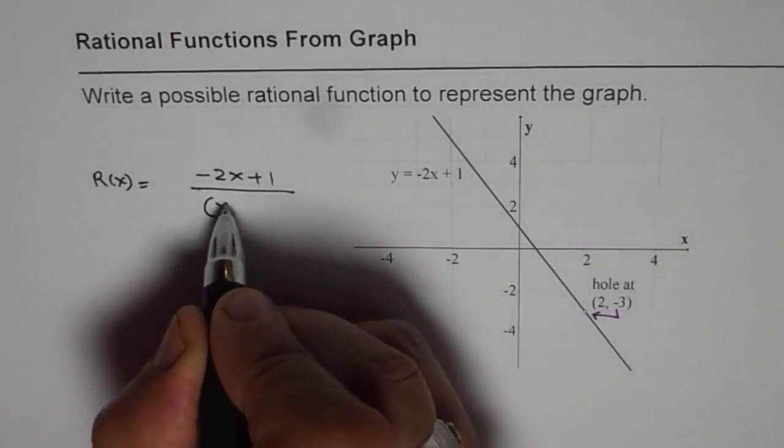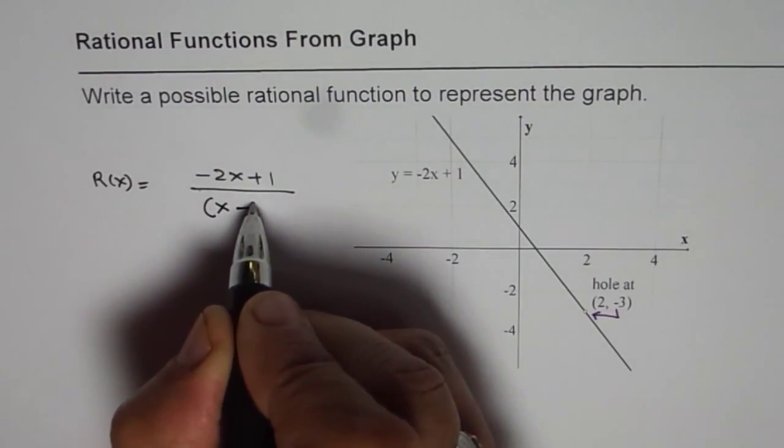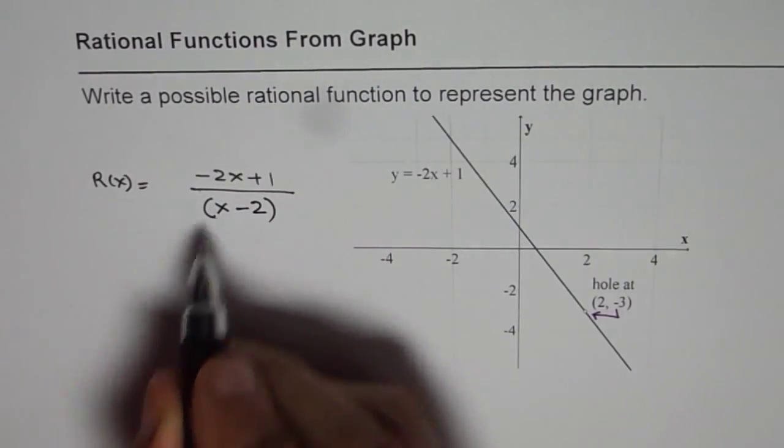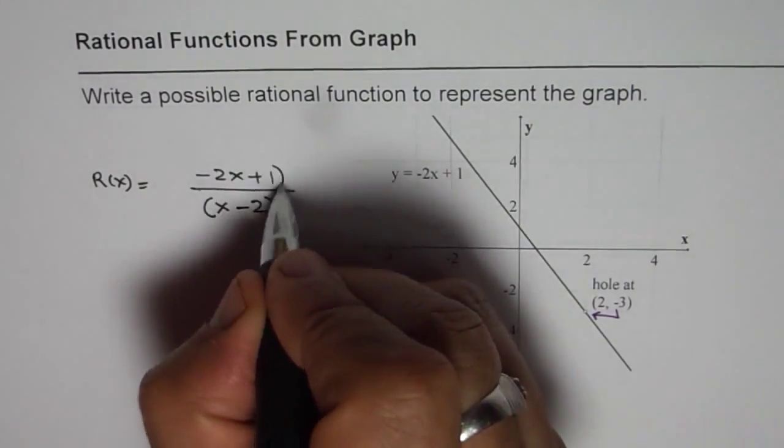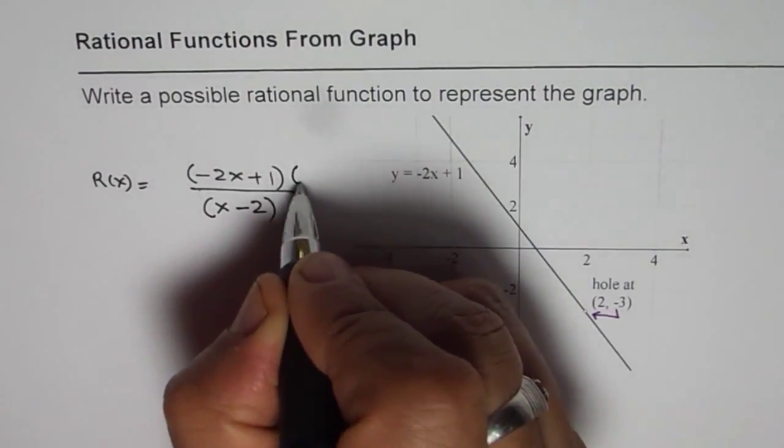So that means we have a common factor in numerator and denominator, which should be 0 for x equals to 2. So the factor is x minus 2, which I should multiply the numerator with also.